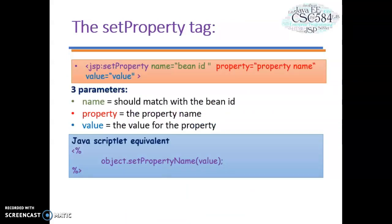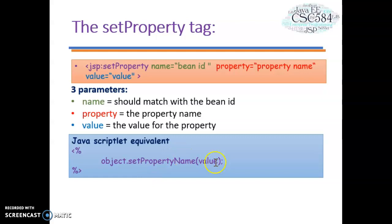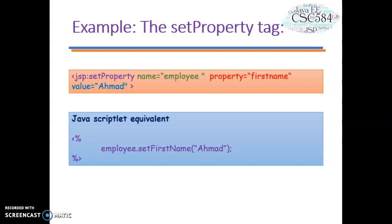Let's move on to setProperty. The syntax is: jsp:setProperty name="beanId" property="propertyName" value="value". It has three parameters: name, which must match the bean ID; property, which is the property name; and value, which is the value for the property. The JavaScript equivalent is calling a method setPropertyName on the object, passing the value. Here is an example for EmployeeBean showing the three parameters — name, property, and value — along with its JavaScript equivalent calling setFirstName on the employee object.